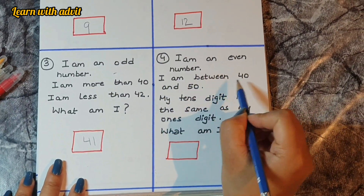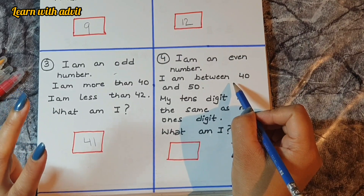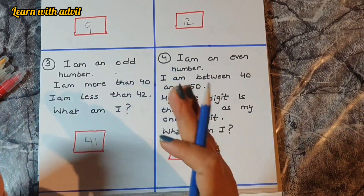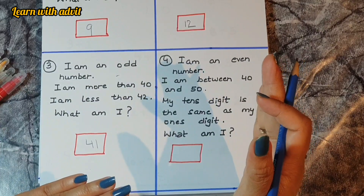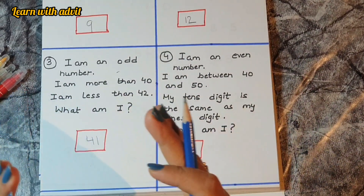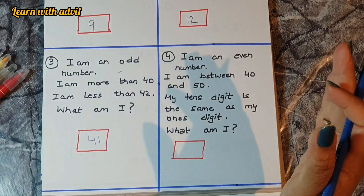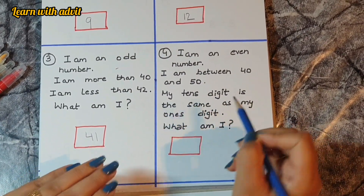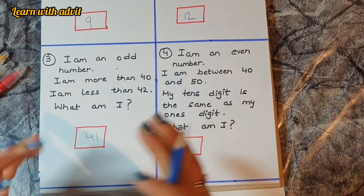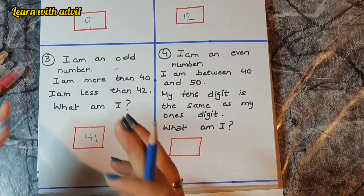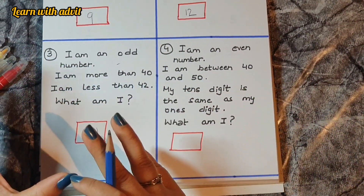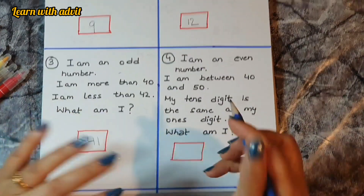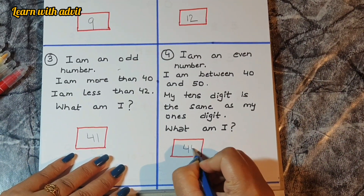Last riddle: I am an even number between 40 and 50. The even numbers between 40 and 50 are 42, 44, 46, and 48. My tens digit is the same as my ones digit. Since kids know ones and tens place, they check which number has matching digits — so the answer is 44.